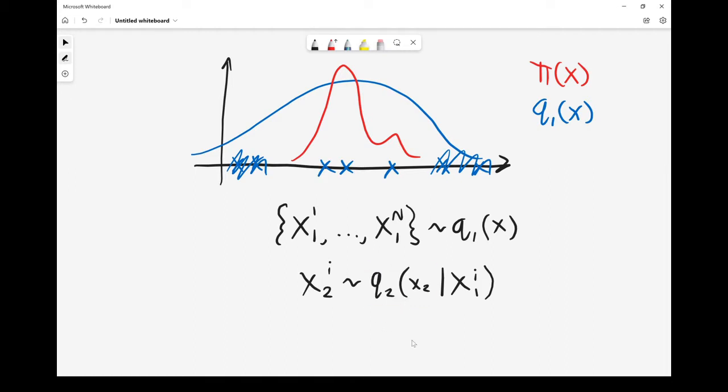Q2 could just be a Gaussian whose mean is equal to your ith sample from the first iteration, i.e. a Gaussian centered on one of these crosses. I say that because we've got this example to motivate what we're doing. But of course, these proposals could be much more complicated, but a Gaussian will do for now.